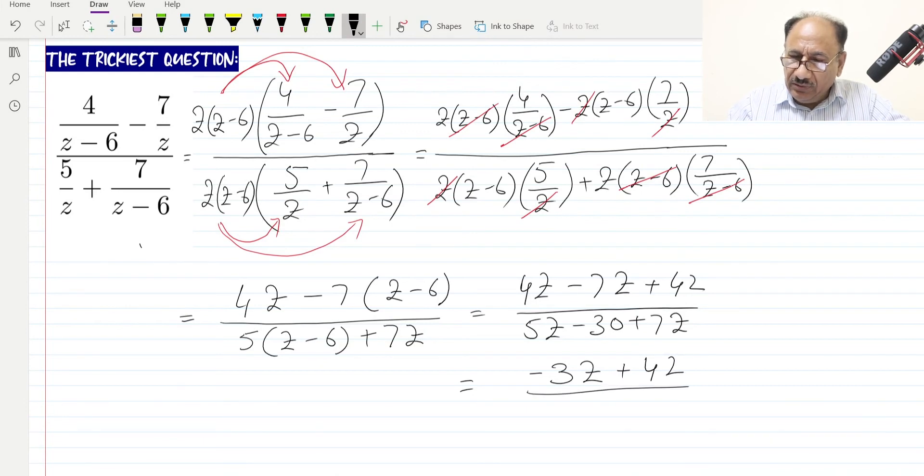Now we can take common factors. From the numerator we can take 3 common, so inside will be minus z plus 14. From the denominator we can take 3 common as well, so it will be 4z minus 10.